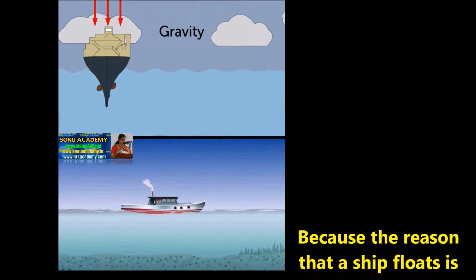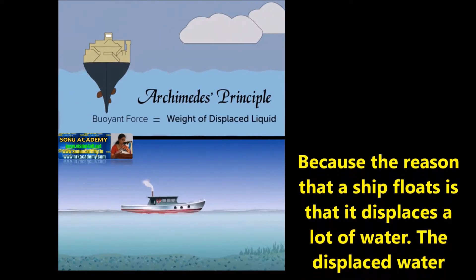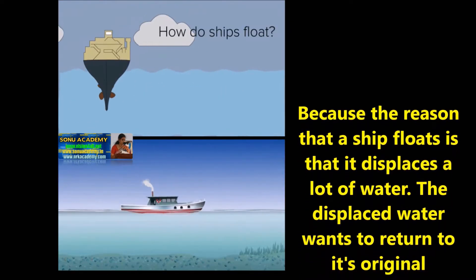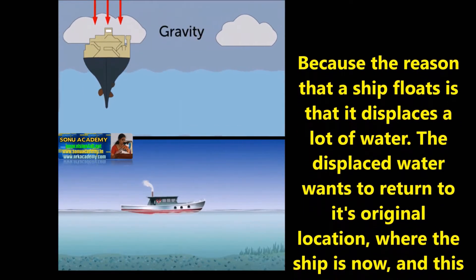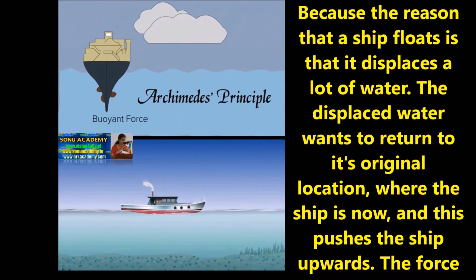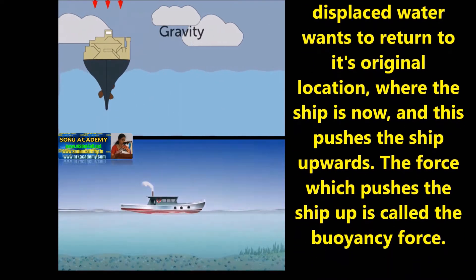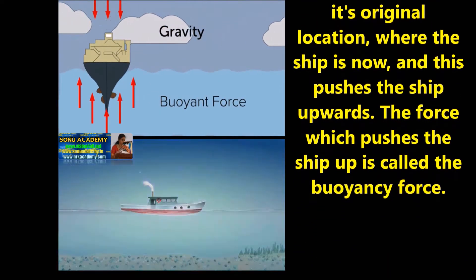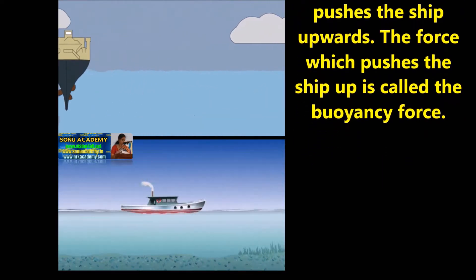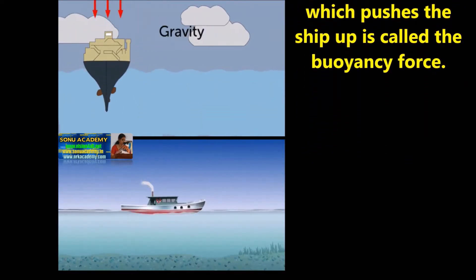The reason that the ship floats is that it displaces a lot of water. This displaced water wants to return to its original location where the ship is now, and this pushes the ship upwards. The force which pushes the ship up is called Buoyant Force.